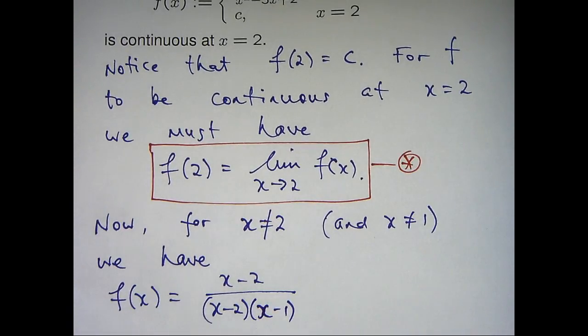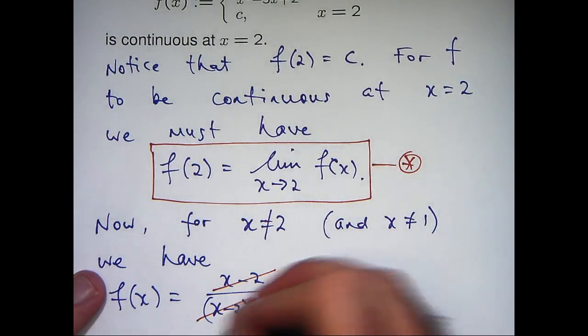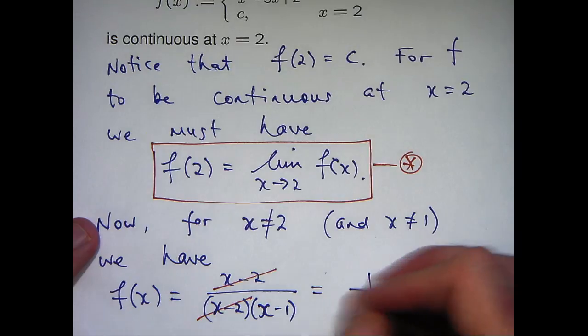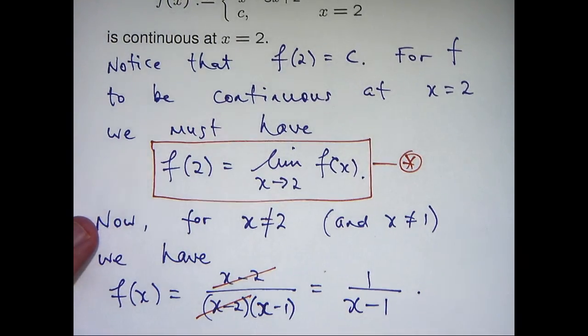Okay, so I can then cancel off because x is not equal to 2 here and I'll get the following.